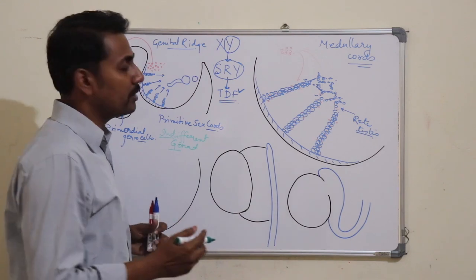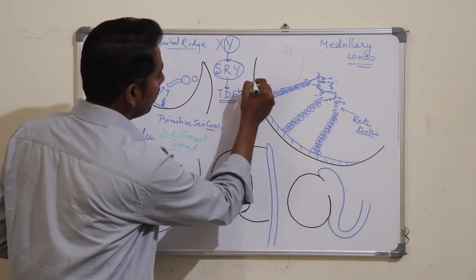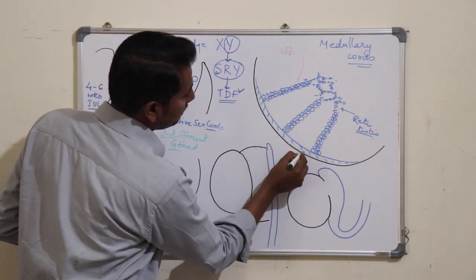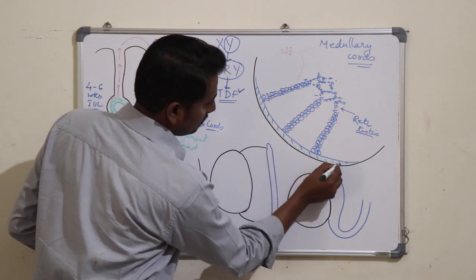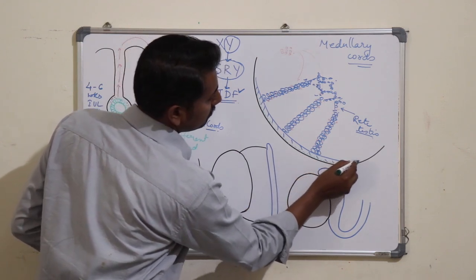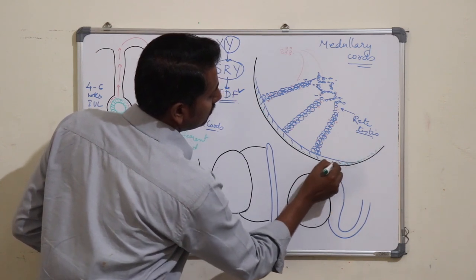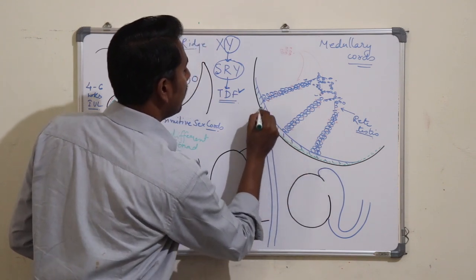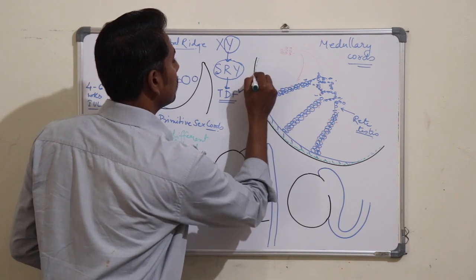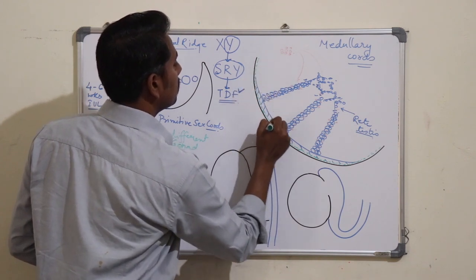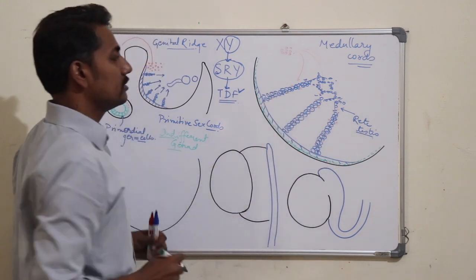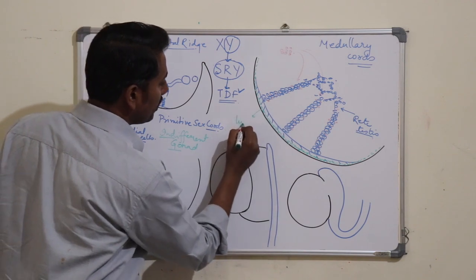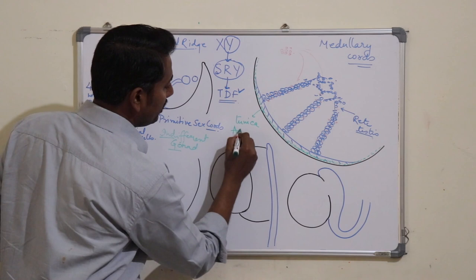With further development the rete testis forms. A thick fibrous connective tissue will appear between the surface epithelium and the developing testis, separating the surface epithelium from the testis. This is called the tunica albuginea.